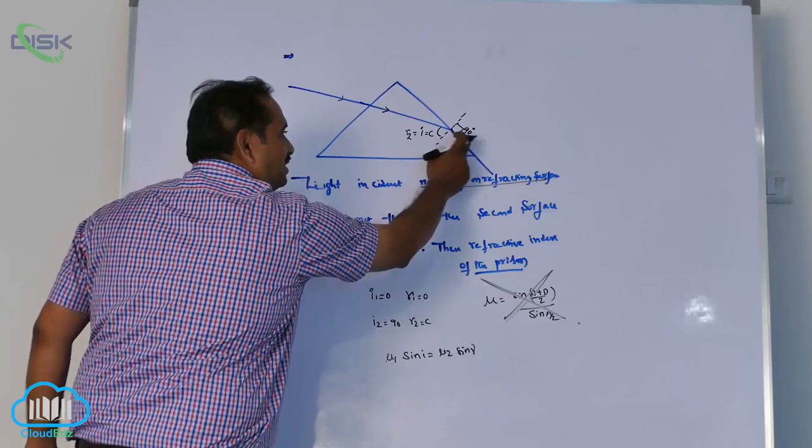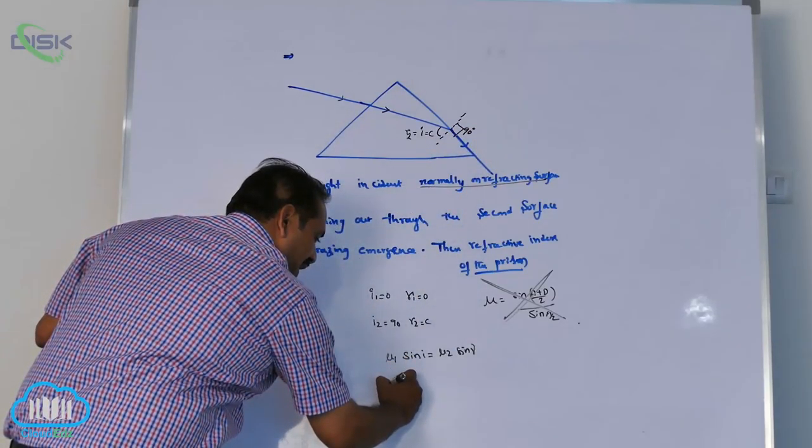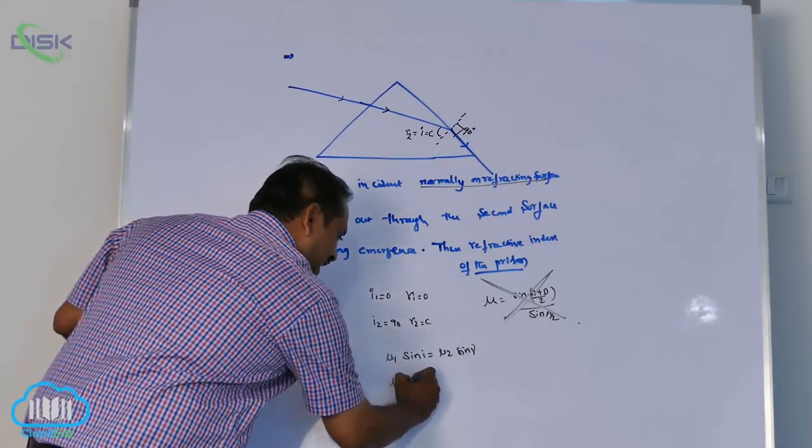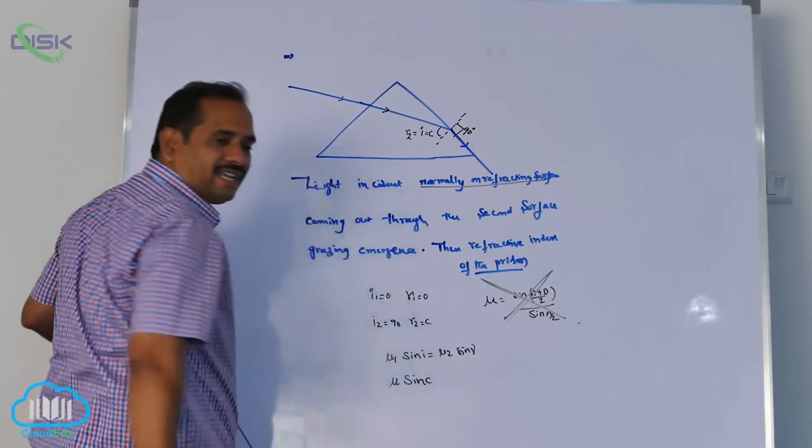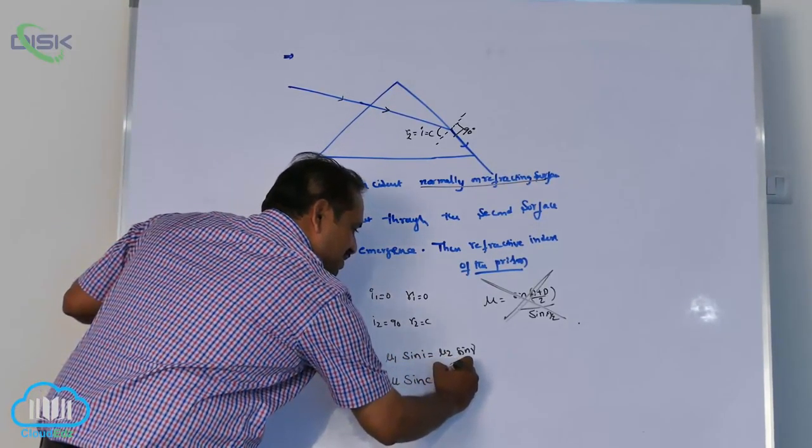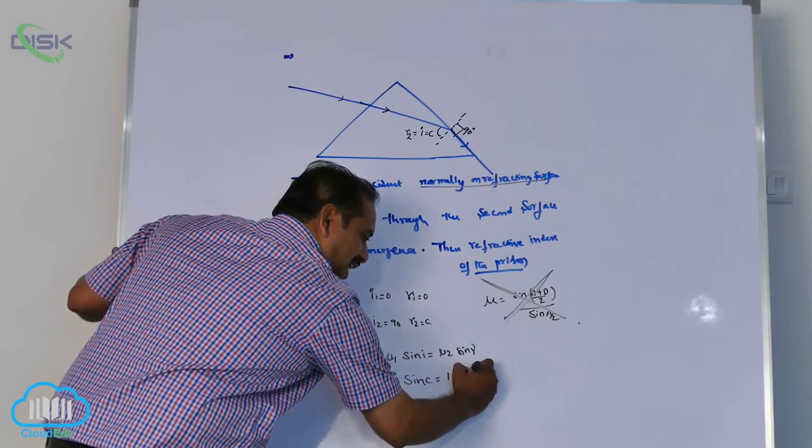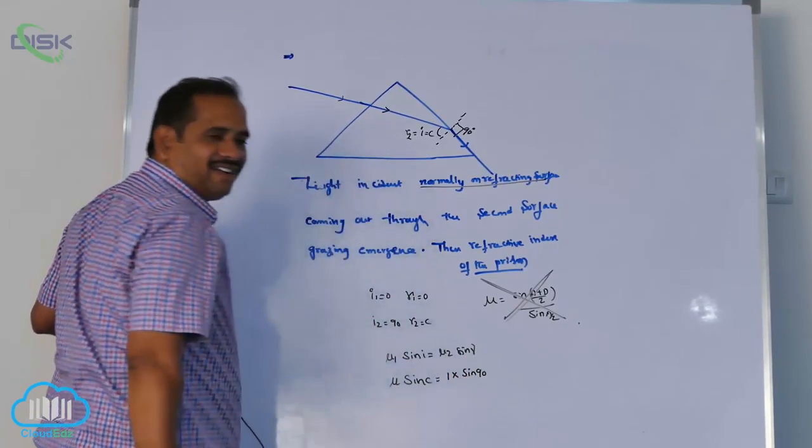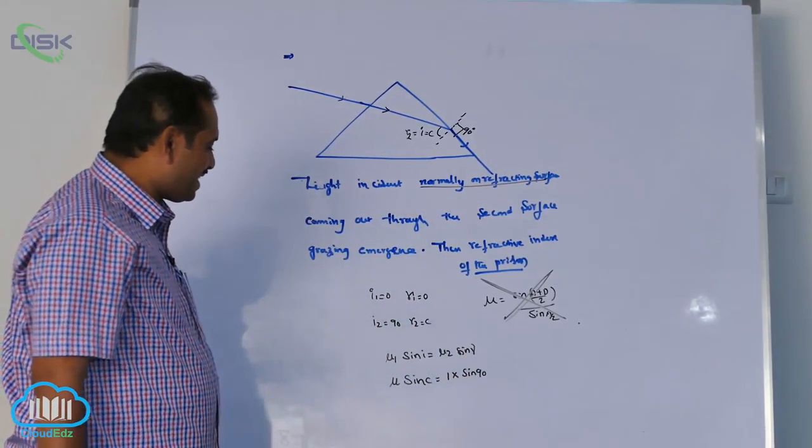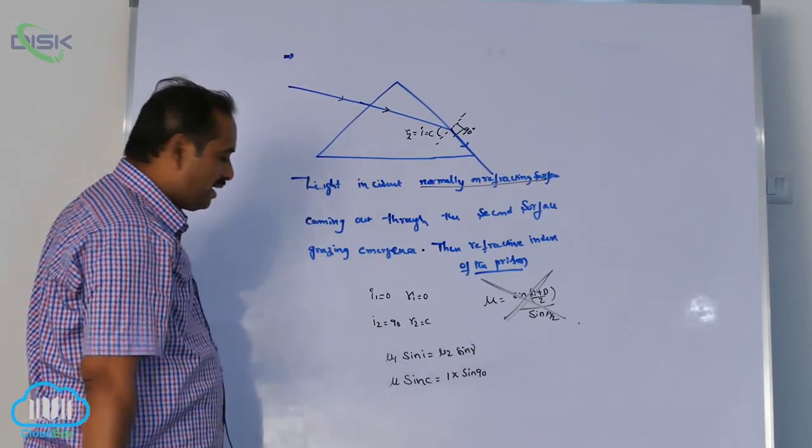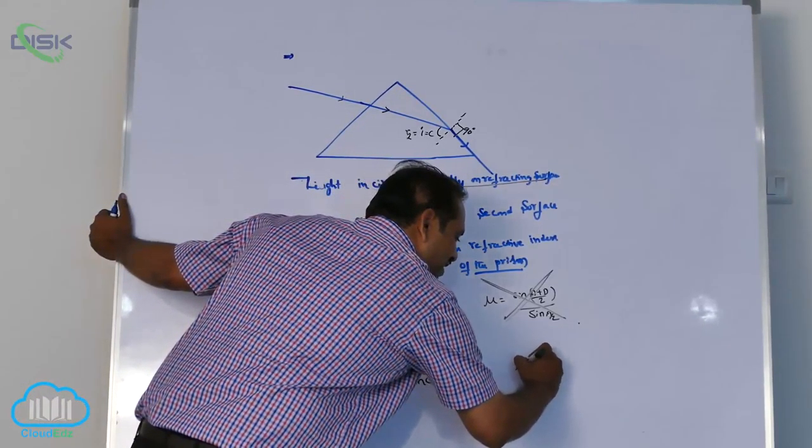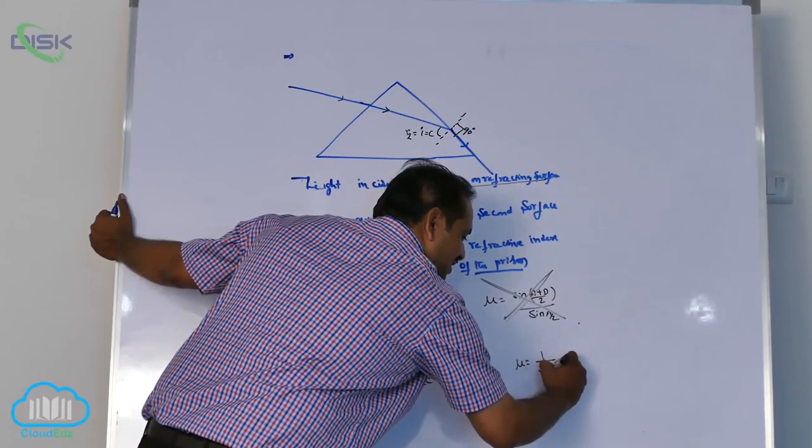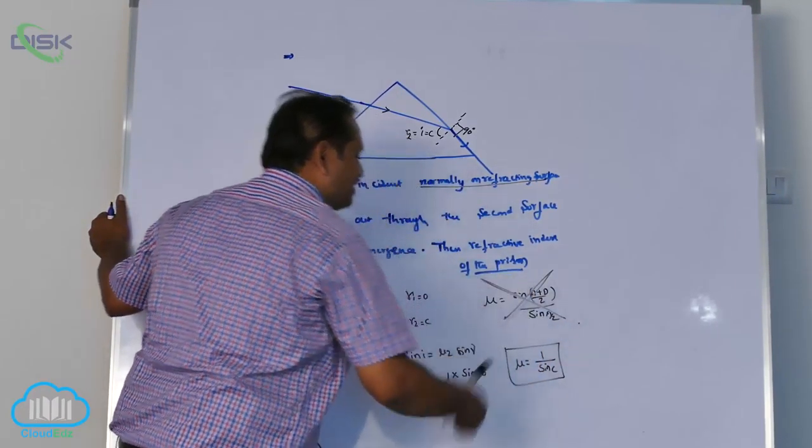That is, light to move from denser to rarer, μ. Sine i is nothing but sine c is equal to, sir, μ2, 1 sine r, sir, sine 90. A lot of you know I think so from your mathematics, sine 90 is what? 1. μ equal to what, sir? 1 by sine c. This is the way to determine the refractive index.